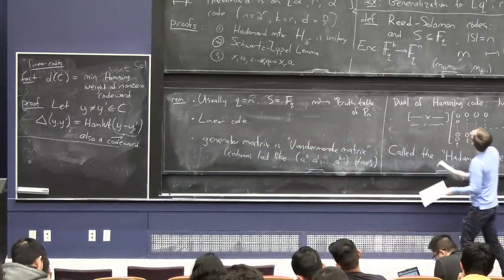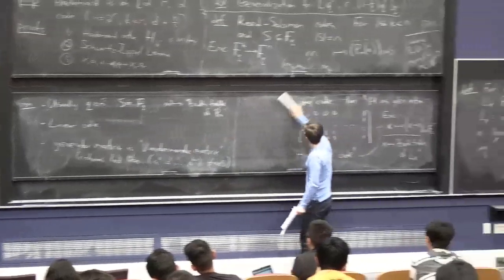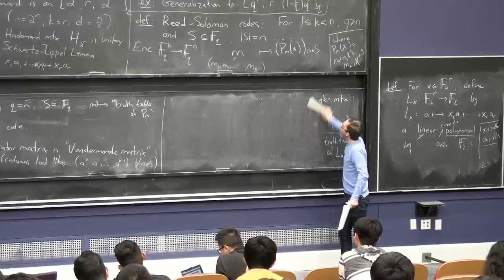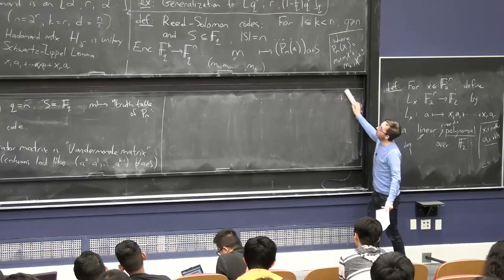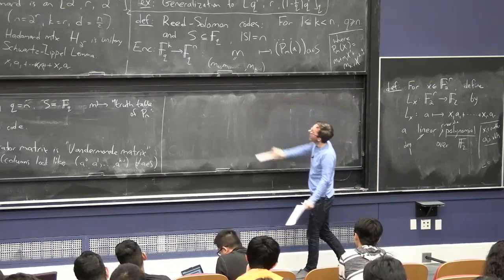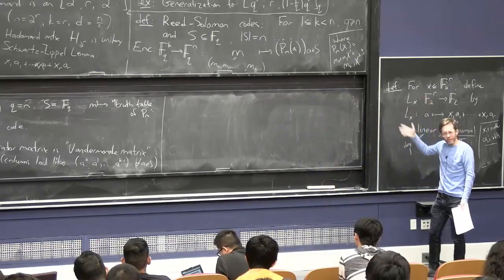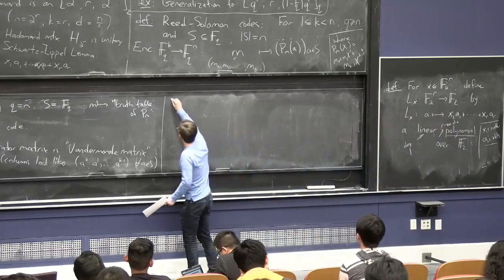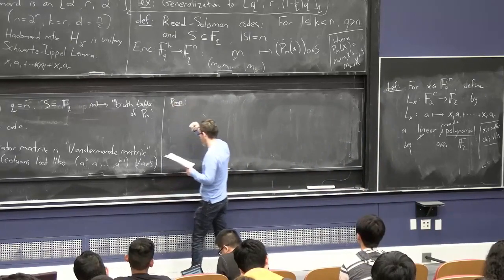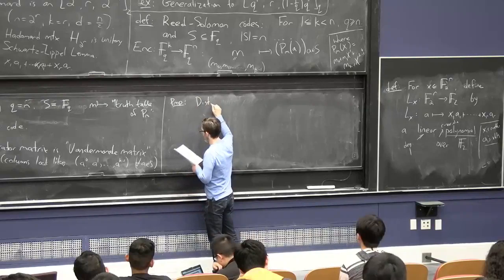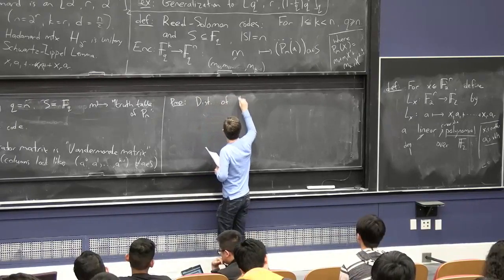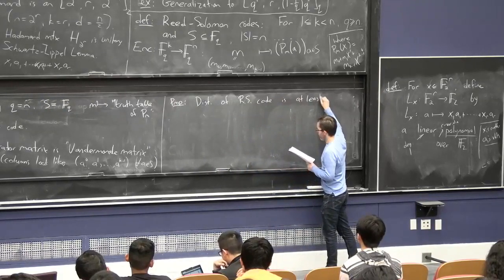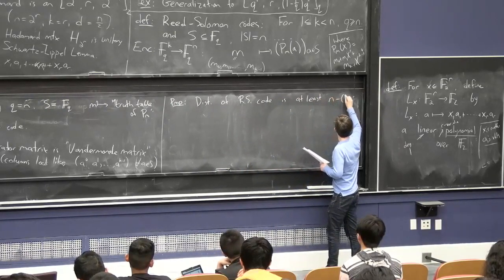You know about the message length k. We know about the block length n. Actually, so far there's no real relationship between them, except that n should be at least k. We know about the alphabet size. Sadly, it's quite large. It's typically n. What about the minimum distance? The fact is that the minimum distance for Reed-Solomon code is real great. So the distance of the Reed-Solomon code is at least n minus k plus 1.